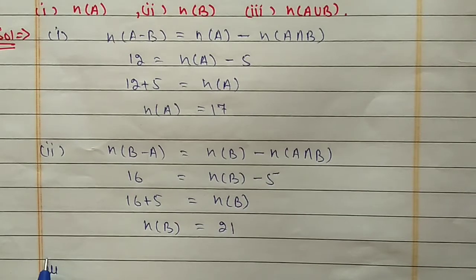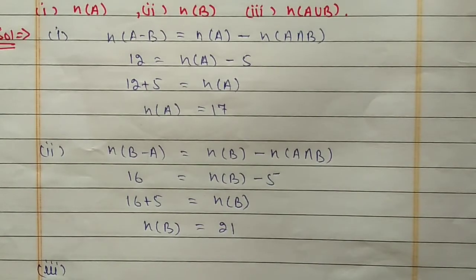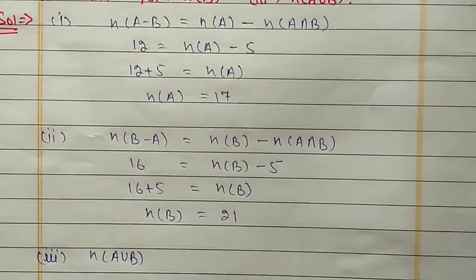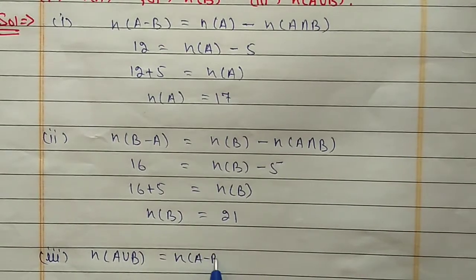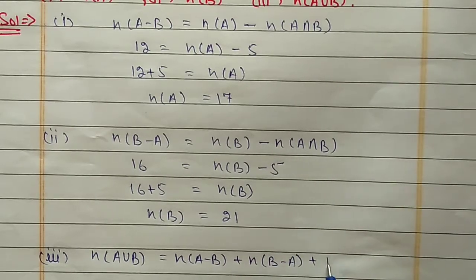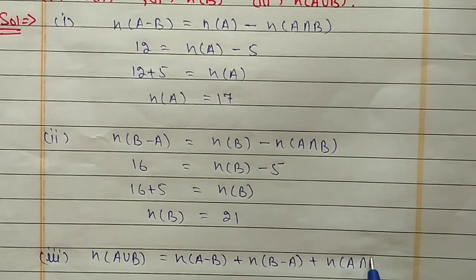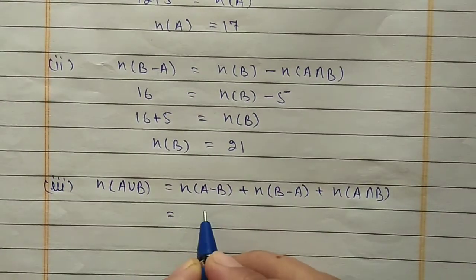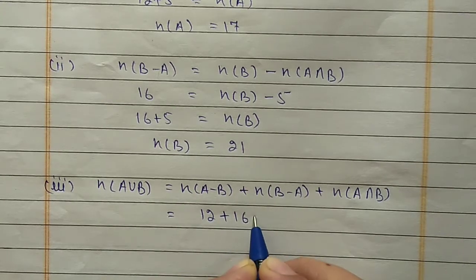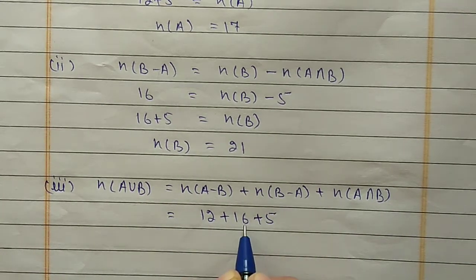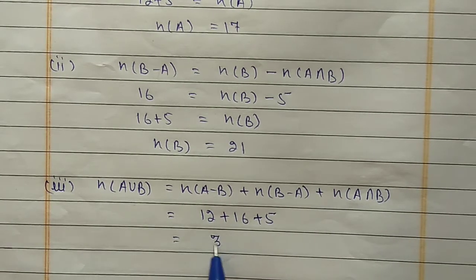For the third part, N(A∪B): using the fourth property N(A∪B) = N(A - B) + N(B - A) + N(A∩B). Substituting values: N(A - B) is 12, N(B - A) is 16, N(A∩B) is 5. So 12 + 16 = 28, and 28 + 5 = 33.